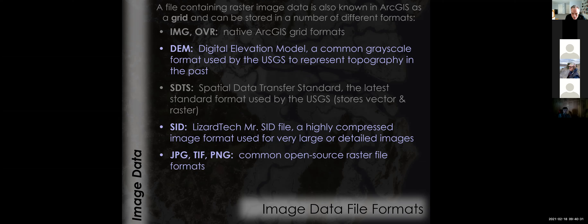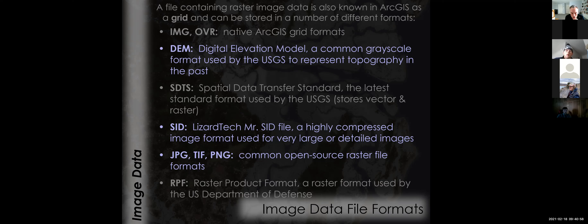Common open-source raster formats like JPEG, TIFF, and PNG can all be used in GIS, but they're not automatically geo-referenced — you need to geo-reference them to tell the software how the image lines up with geographic data in your map. RPF, raster product format, is used by the US Department of Defense for declassified mapping data. The vector format for DoD imagery is VPF, and for raster it's RPF.